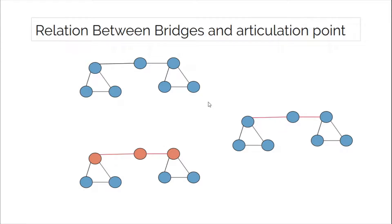So is it true that any endpoint of a bridge is an articulation point? If this is true then we can use the same algorithm we use to find bridges — whenever we find a bridge we can insert both endpoints into a set so that we have the unique vertices which are cut vertices. But before answering that question, let's understand why the endpoints of bridges are actually cut vertices. When we know an edge is a bridge, removing that edge disconnects the graph. When you remove the endpoint vertex, what would happen?